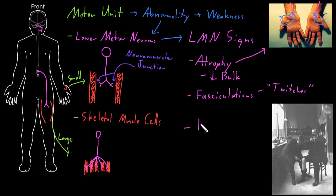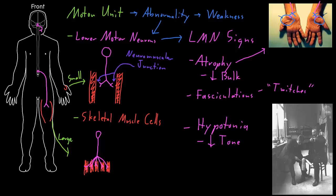The next lower motor neuron sign is called hypotonia, which means a decrease in the tone of skeletal muscle. Tone refers to how much the muscle is contracted when a person is trying to relax it, because our muscles are always just a little bit contracted even when we're not trying to contract them. If a doctor tells a patient to relax their leg completely and then starts bending and unbending their knee, the doctor will feel a little bit of resistance — a little bit of tone — even when the person is trying to relax. But if there's a problem with the lower motor neurons so that they aren't telling the skeletal muscle cells to contract as much, there won't be as much tone — there will be hypotonia — and the doctor will feel that the leg is kind of floppy.